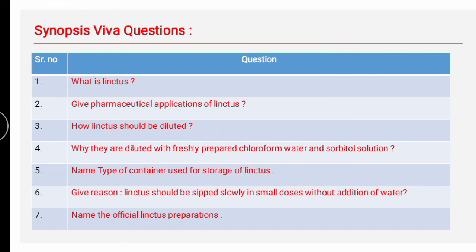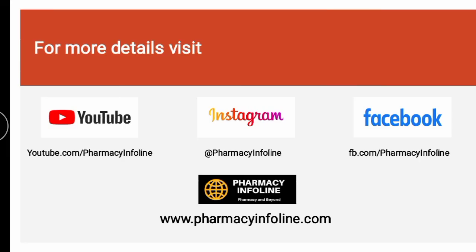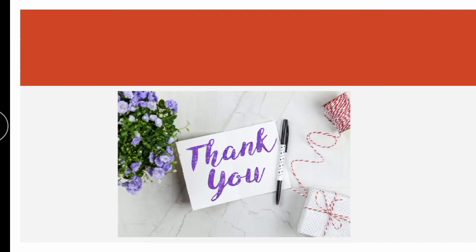Synopsis viva questions include: What is linctus? Give the pharmaceutical applications of linctus. How should linctus be diluted, and why are they diluted with freshly prepared chloroform water and sorbitol solution? Give the reason why linctus should be sipped slowly in small doses without the addition of water. Name some official linctus preparations — noscopine linctus and pholcodine linctus are official in IP96, while methadone linctus and opiate squill linctus are official in BPC. With this we finish the terpene hydrate linctus preparation.